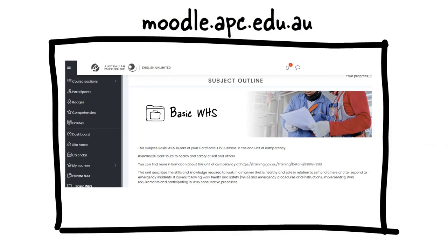The first block you'll see is your subject outline. Here you'll see a summary of the subject. If this subject is a prerequisite, there'll be a note here telling you so.